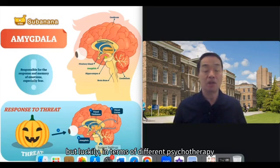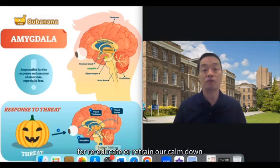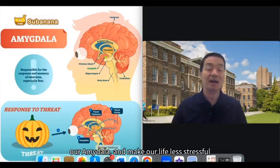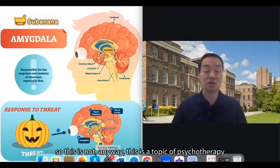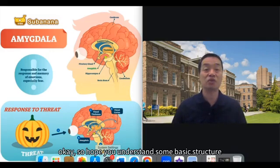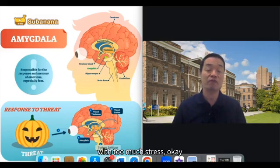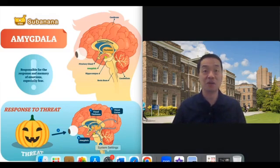Luckily, in terms of different psychotherapy approaches, we can try many methods to re-educate or re-train the amygdala, calm it down, and make life less stressful — and the problem can be resolved. This has been the topic of psychotherapy. I hope you now understand the basic structure of the amygdala and what happens to those people with too much stress, and the reaction of amygdala overstimulation. Thank you very much, see you next time.